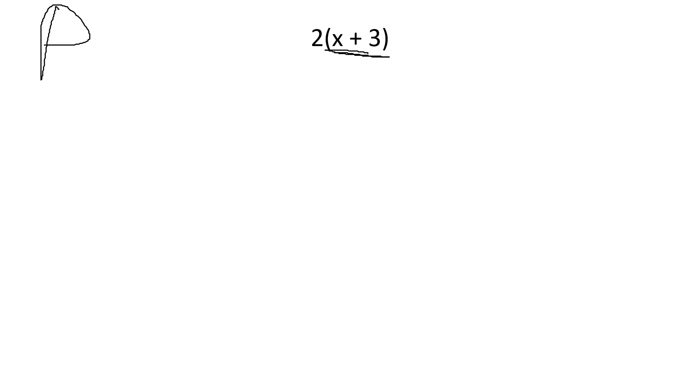Here's the thing. x and 3, I cannot add. If I have an x and a 3, I can't combine those two. They're not what's called like terms. You can only add things if they're like terms, if they have the same letters. x and 3 are not the same. They're not like terms, so we can't add them.